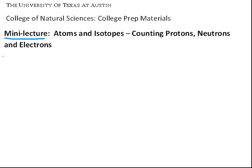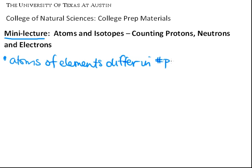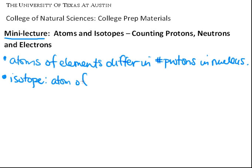There are a couple of important things you should know. The first is that atoms of elements differ in the number of protons in the nucleus. The second point is that isotopes are atoms of a given element with different masses.